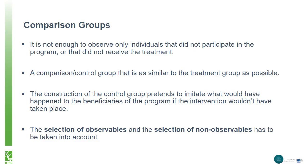To construct the counterfactual we must find a comparison group. However, this group cannot just be any group that did not participate or did not receive the treatment — it must be as similar as possible to the group that did receive the program, the target or treatment group. The control group, if similar enough to the treatment group, would then allow us to estimate what would have happened to the treatment group without the program. In the example of a good harvest year, the control group would be equally affected. To assure that our control group can be used in this way, we need to consider the observable and non-observable indicators.